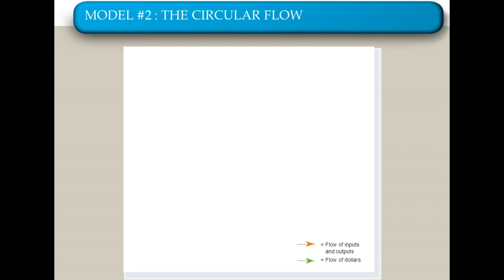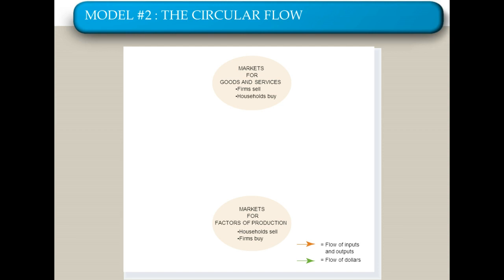There are essentially two types of markets in an economy. The first is called a factor market — sometimes called a resource market — where all the factors of production (land, labor, and capital) are sold. The other market is called the product market, which is the market we might be more familiar with: where we buy and sell goods and services. All of our transactions take place in one of these two markets.